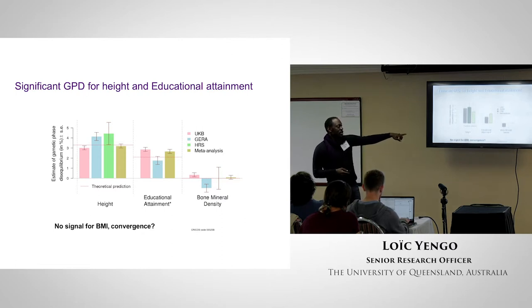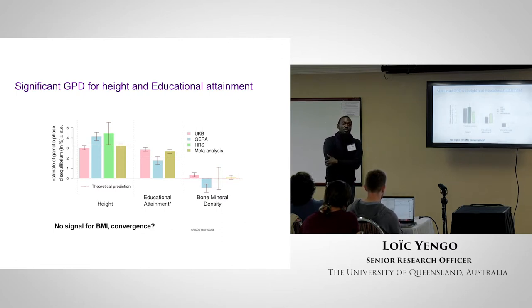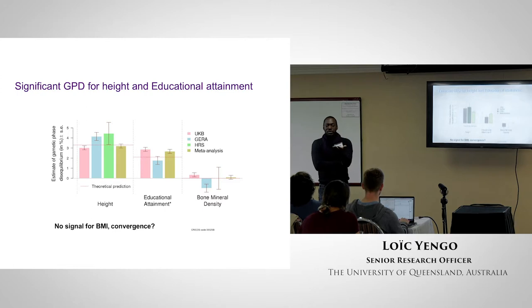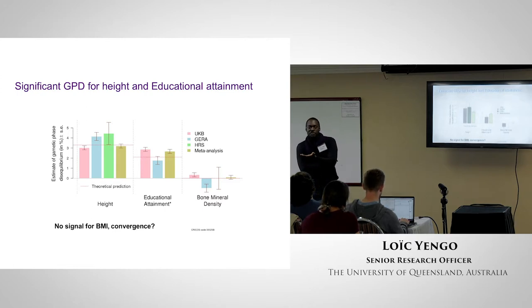For bone mineral density, there is no known evidence of assortment — if you measure that on spouses, you should find a correlation around zero.